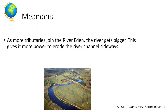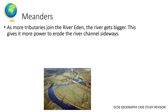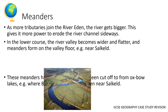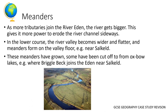Next, meanders occur as the river gets bigger with more tributaries joining it. You get lateral erosion and the river floor becomes wider and flatter, for example near Selkeld — that's the meander we can see on screen. Some meanders have grown and begun to be cut off to form oxbow lakes; one example is where Brigglebeck joins the Eden near Selkeld.